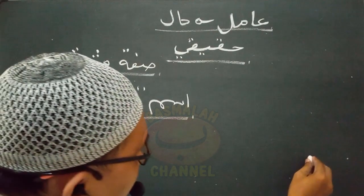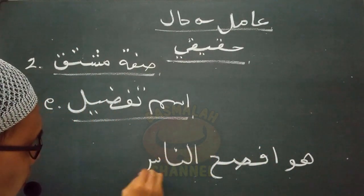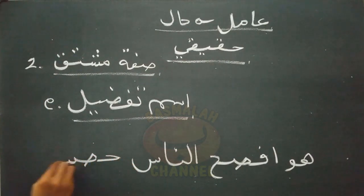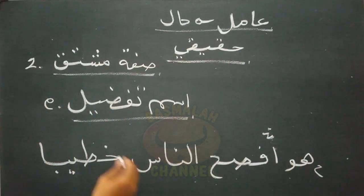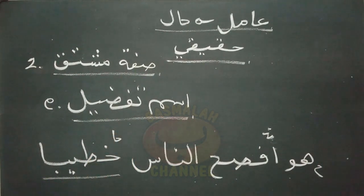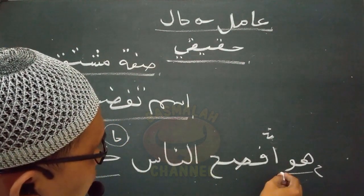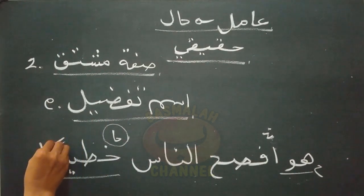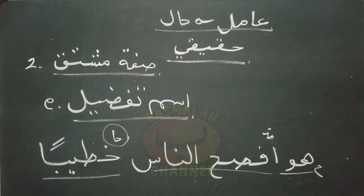Selanjutnya adalah berbentuk isim tafdil. Contohnya 'huwa afsuhun nasi khotiban' - dia ialah paling fasehnya manusia dalam keadaan sebagai khotib atau orang yang berpidato. Lafat khotiban kedudukannya sebagai hal yang menjelaskan keadaan daripada lafat huwa sebagai sahib halnya, wajib dibaca nasob. Yang menasokkan adalah lafat afsuhun nasi yang berupa isim tafdil. Inilah bentuk-bentuk amil hal hakiki yang berupa kalimat fi'il dan sifat mushtaq.